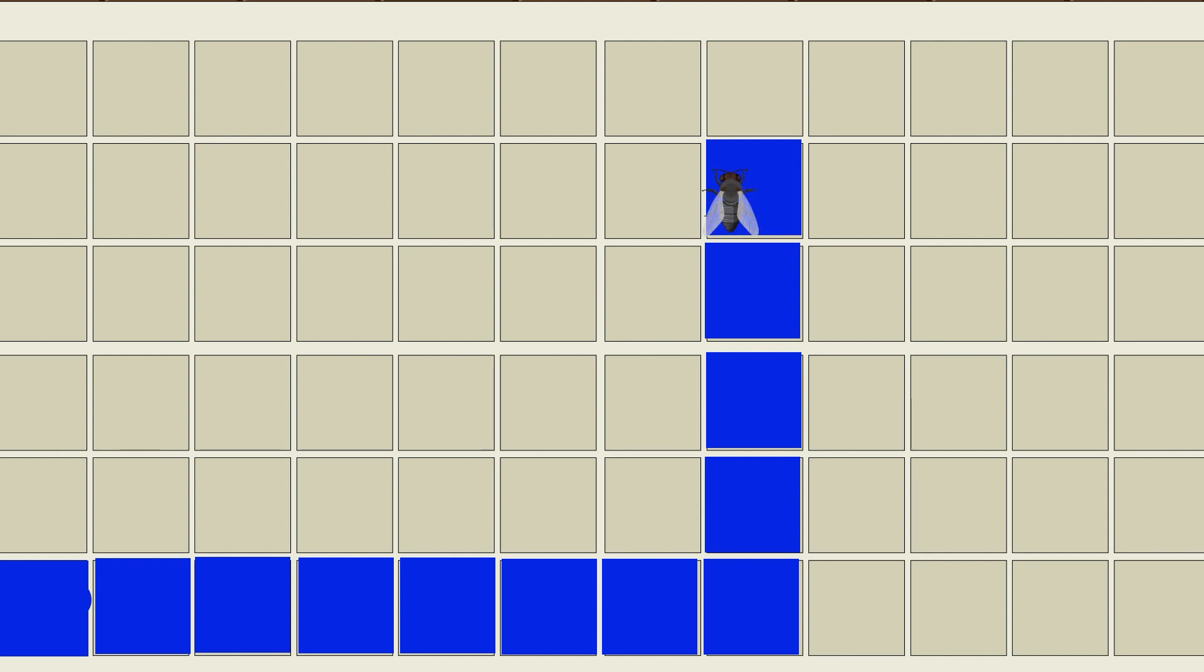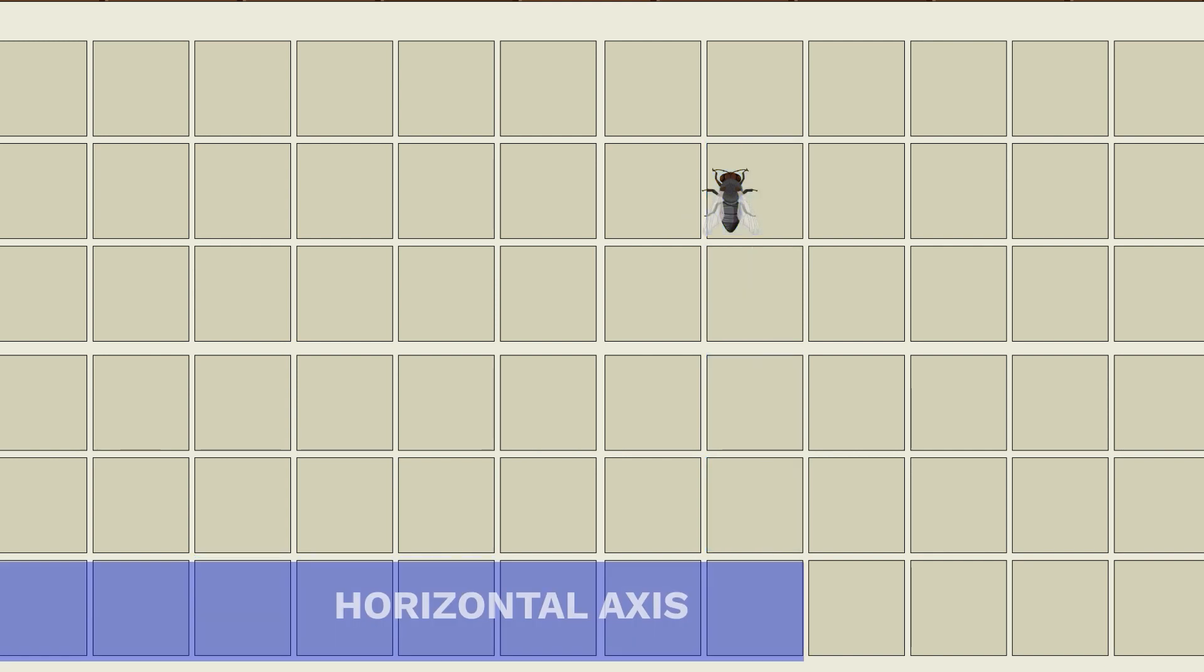He used the square tiles on his ceiling to define the position of the fly. He counted the number of horizontal boxes from the point of reference and then the vertical boxes from there to the fly's position. The horizontal steps became the horizontal axis and the vertical steps became the vertical axis.